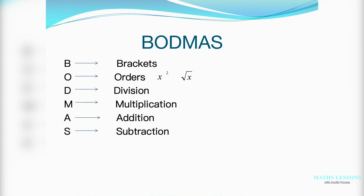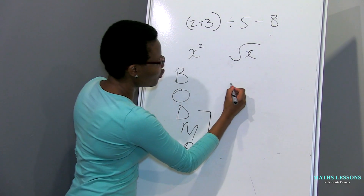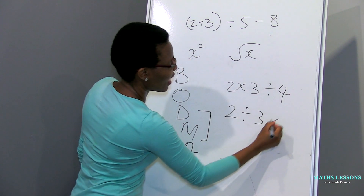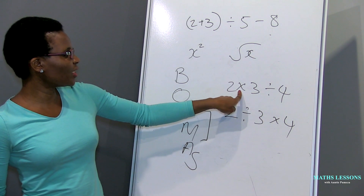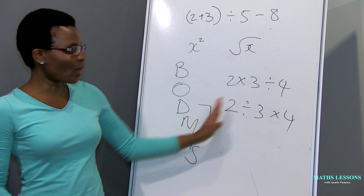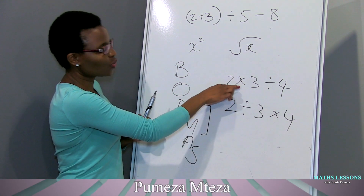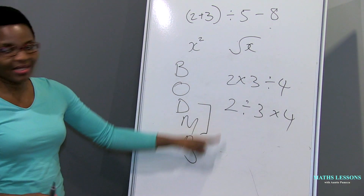Then D and M — division and multiplication. These two are in the same level, meaning you start with the one that is on your left. So if you have two times three divided by four, you start with the multiplication because it's on the left. But if you have two divided by three times four, you start with the division because it's on the left. Although you have the same numbers, you will probably get different answers because of this rule — always start with the one on the left.